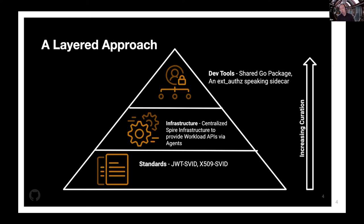For teams that don't necessarily want to deal with raw infrastructure, at the very top — where we hope to land almost everybody — is development tools: shared libraries, packages. We've also developed an external authorization-speaking sidecar, as in Envoy external authorization. We can actually use Envoy to inject and validate JWT tokens coming in and out of your service. This use case is particularly applicable for dynamic languages where we may not want to go too deep into the app or do too much surgery on the workload — things we're really just trying to mediate authentication for using SPIFFE.